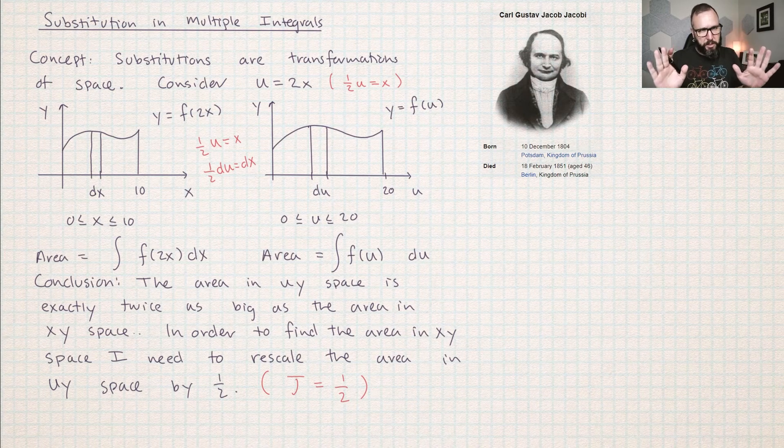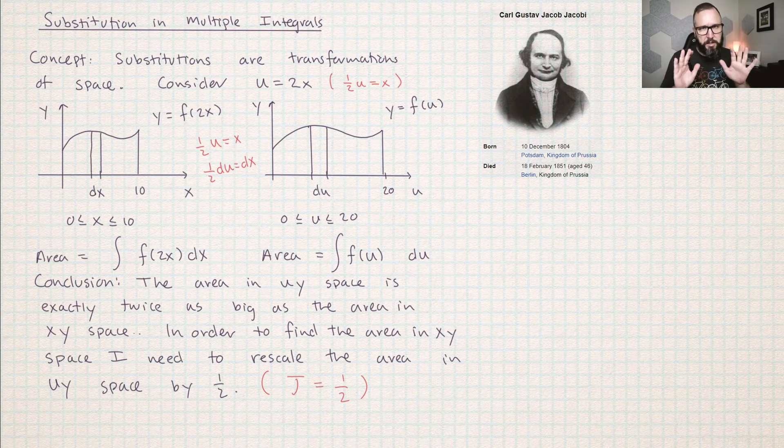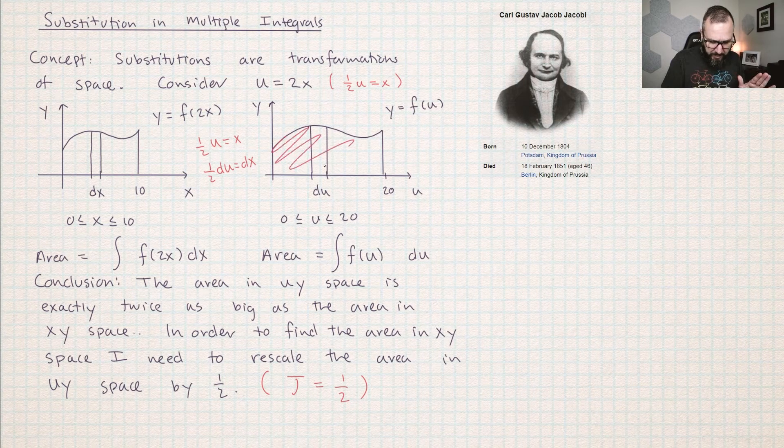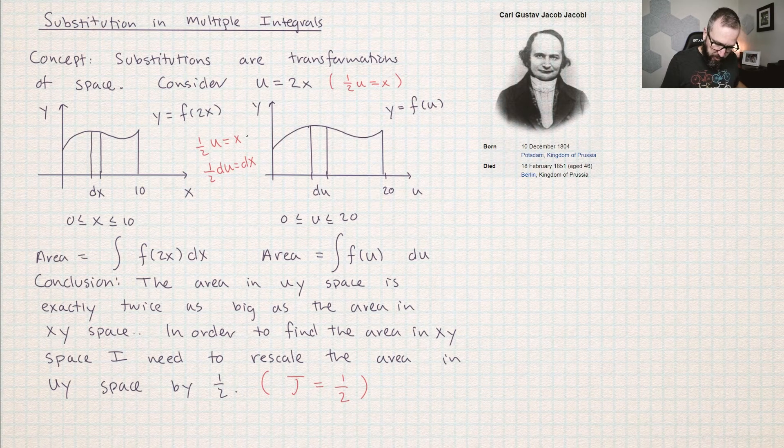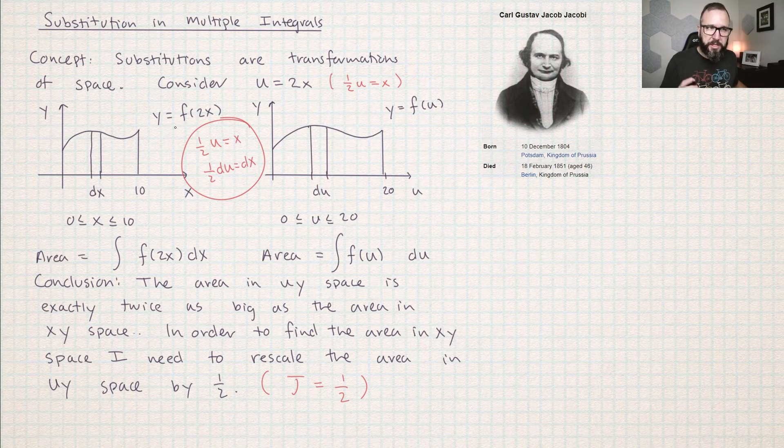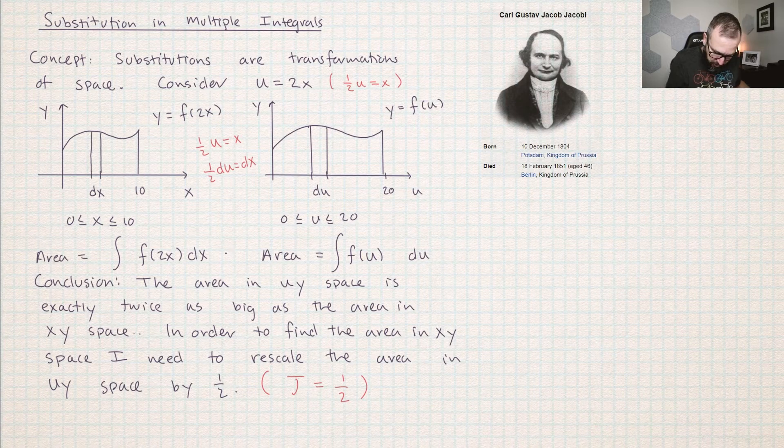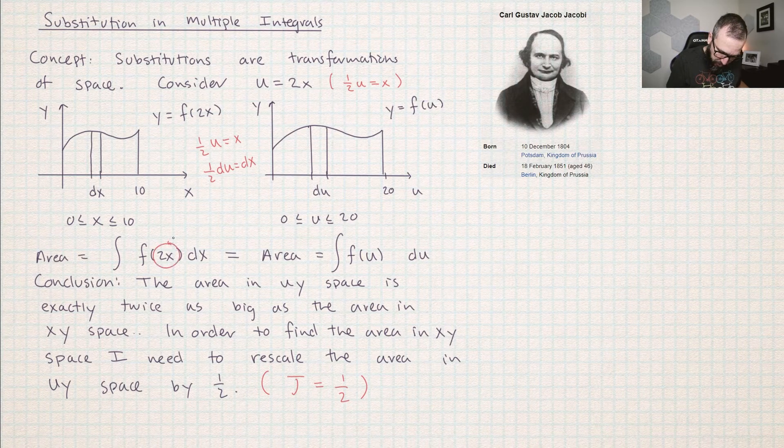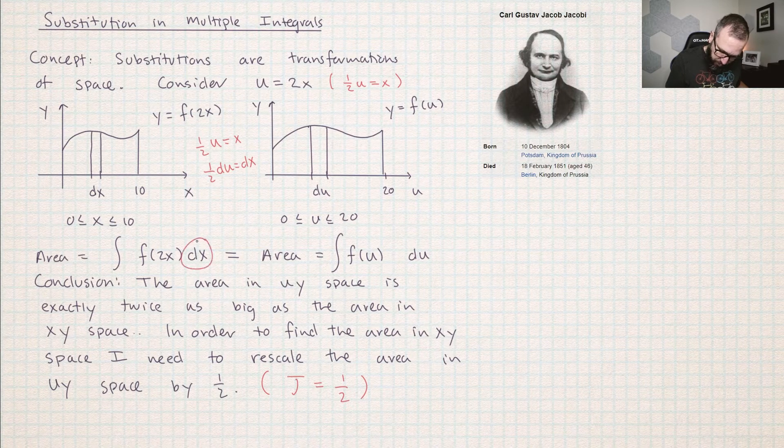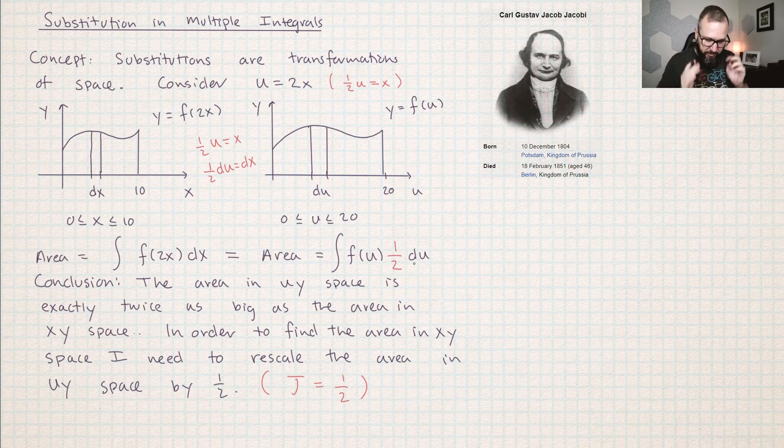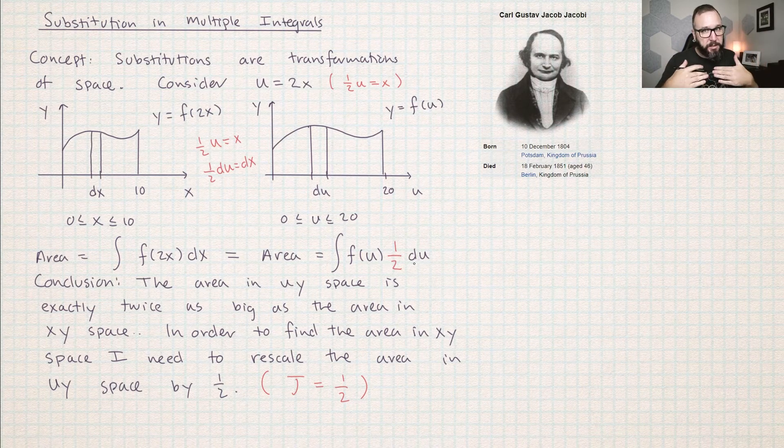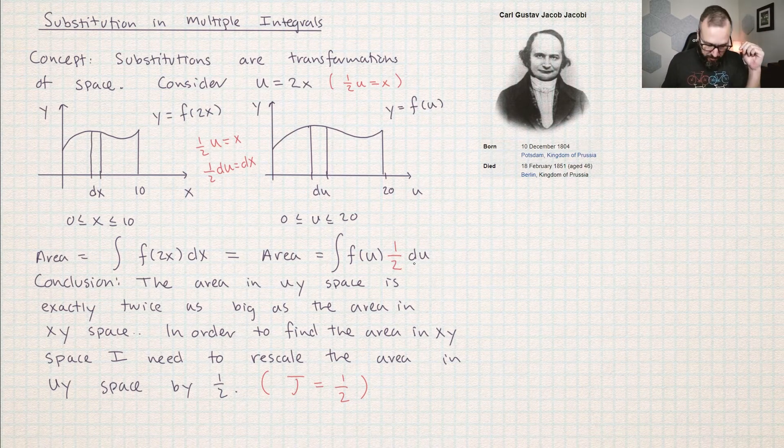By how much? I think everybody knows by now. You all passed Calc 1. So I think you know how much bigger the area in u,y space is going to be than the area in x,y space. But let's look, what does this substitution do? If one half u equals x, then one half du equals dx. So if I want to make these areas the same, then I trade out the 2x for u and I trade out the dx for one half du because the area in u,y space is exactly twice as big as the area in x,y space. If I multiply the answer by one half, then I will still be calculating the area in x,y space.